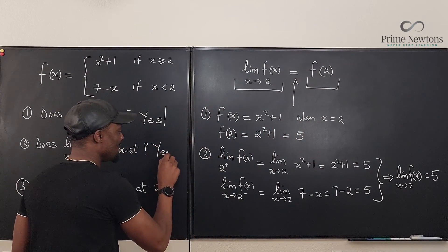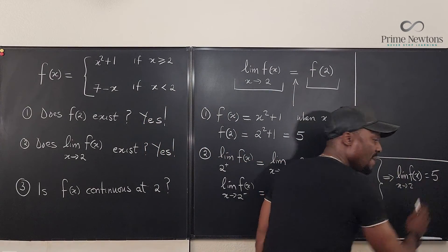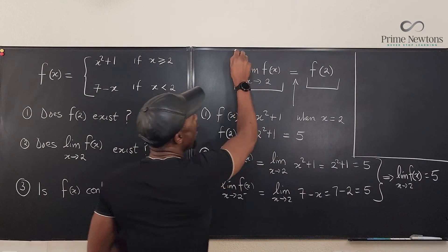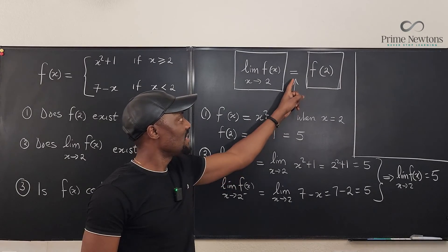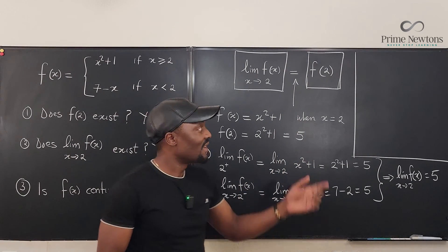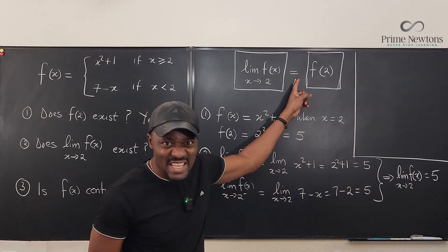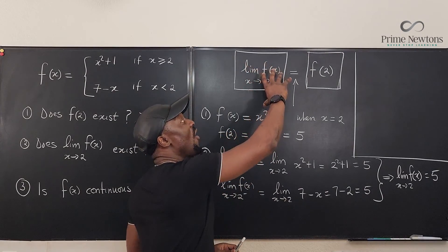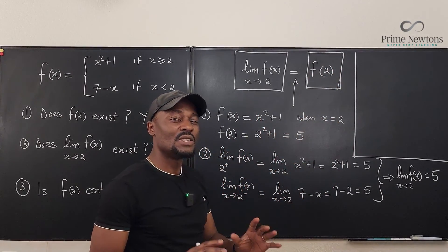The answer to the second question is yes — the limit exists. Now for the final question: because f(2) = 5 and the limit as x approaches 2 is also 5, all three parts of the continuity equation hold. The limit equals the function value. Therefore, the function is continuous at 2. Because the limit of the function as x approaches 2 is equal to the function value at 2, the function is continuous at 2.